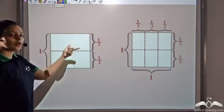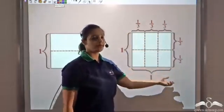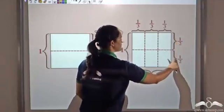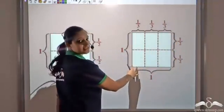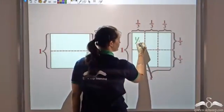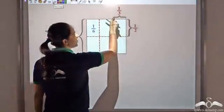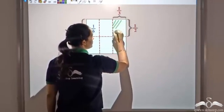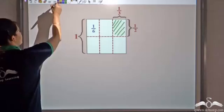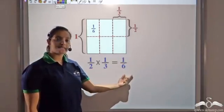We already had this sheet of paper divided into half. Now we divide it into further 3 equal parts: 1, 2, 3. Each part is 1 third, and this sheet is also divided into 2 parts. On the whole, I have divided this sheet into 6 equal parts: 1, 2, 3, 4, 5, 6. Each part represents 1 sixth. If I find the area of one particular part, it would be 1 by 3 times 1 by 2, and this portion is also equal to 1 by 6. So 1 by 2 times 1 by 3 is equal to 1 by 6.